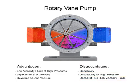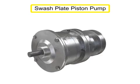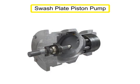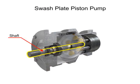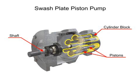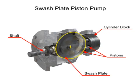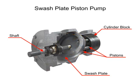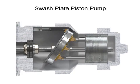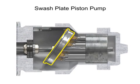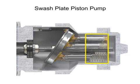Piston pumps come in many different forms. A swash plate is a device used to translate the motion of a rotating shaft into the reciprocating motion of a piston. Swash plate piston pumps have a rotating shaft connected to a cylinder block containing pistons, which are pressed against a stationary swash plate that sits at an angle to the cylinder. As the shaft rotates, the pistons move against the swash plate, causing them to reciprocate within the piston block.